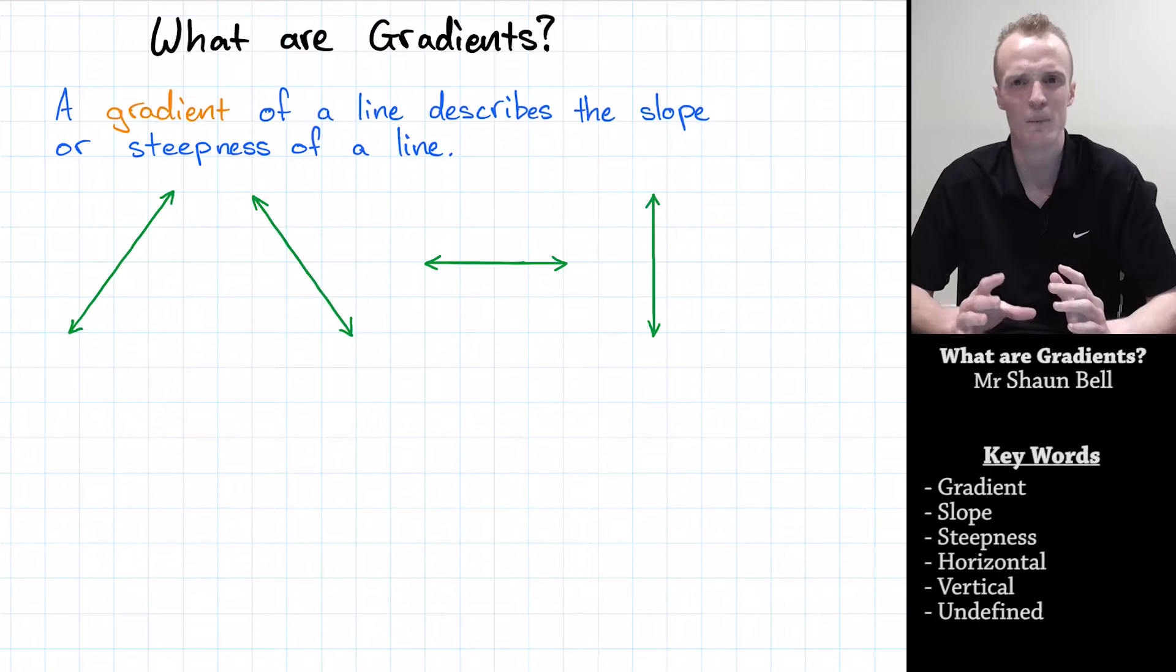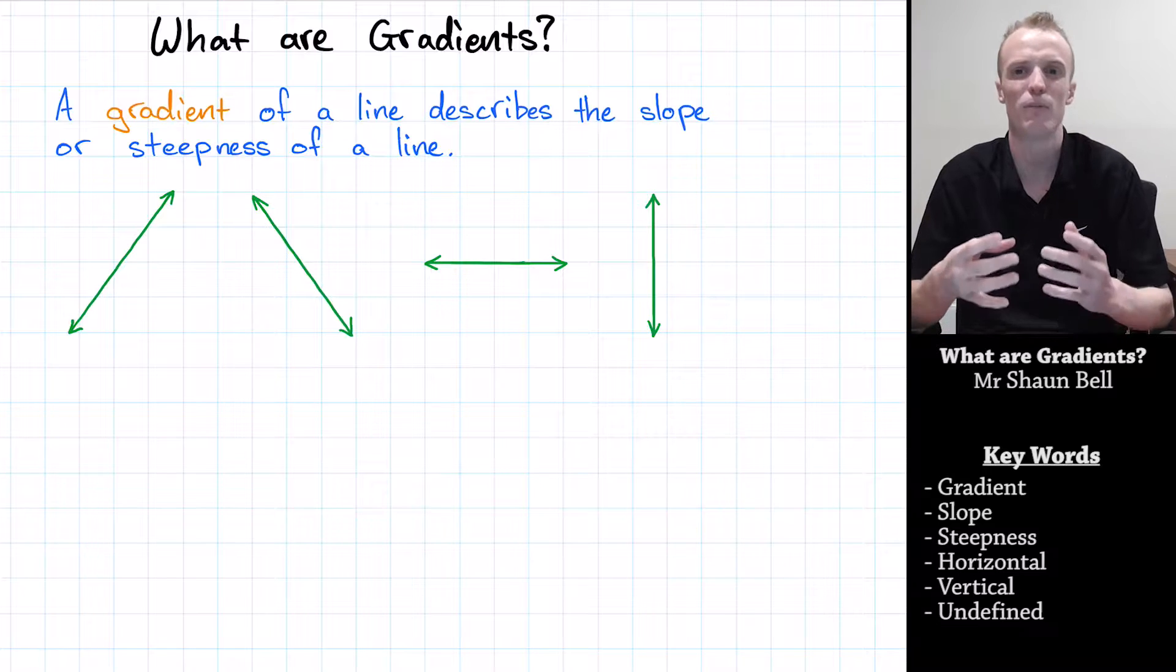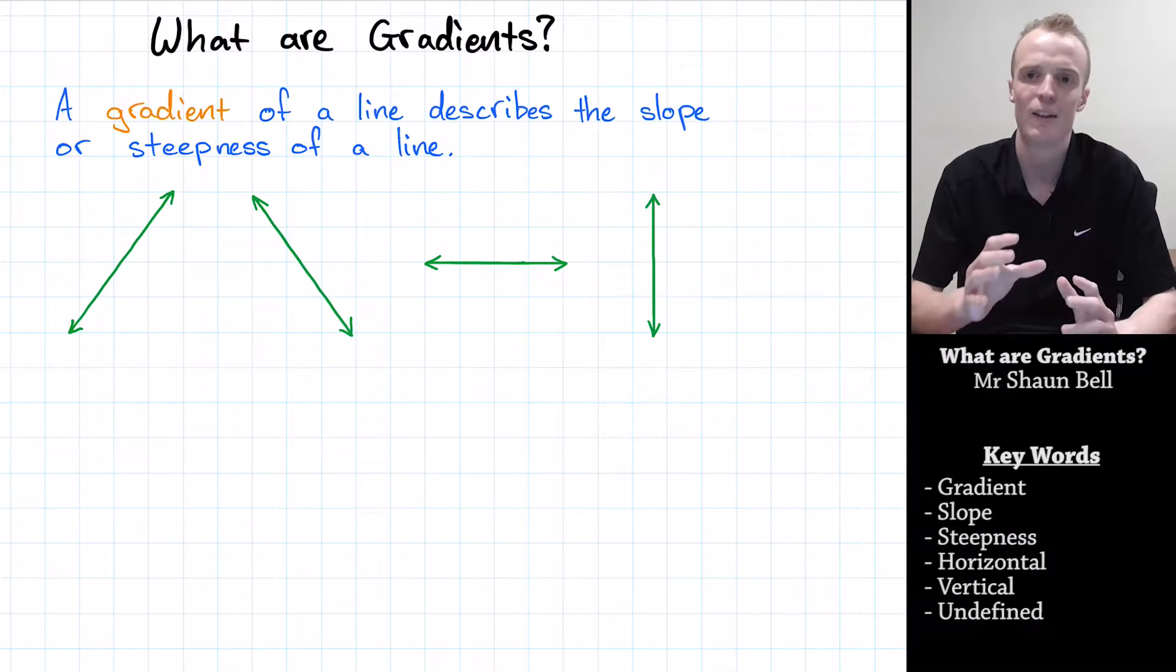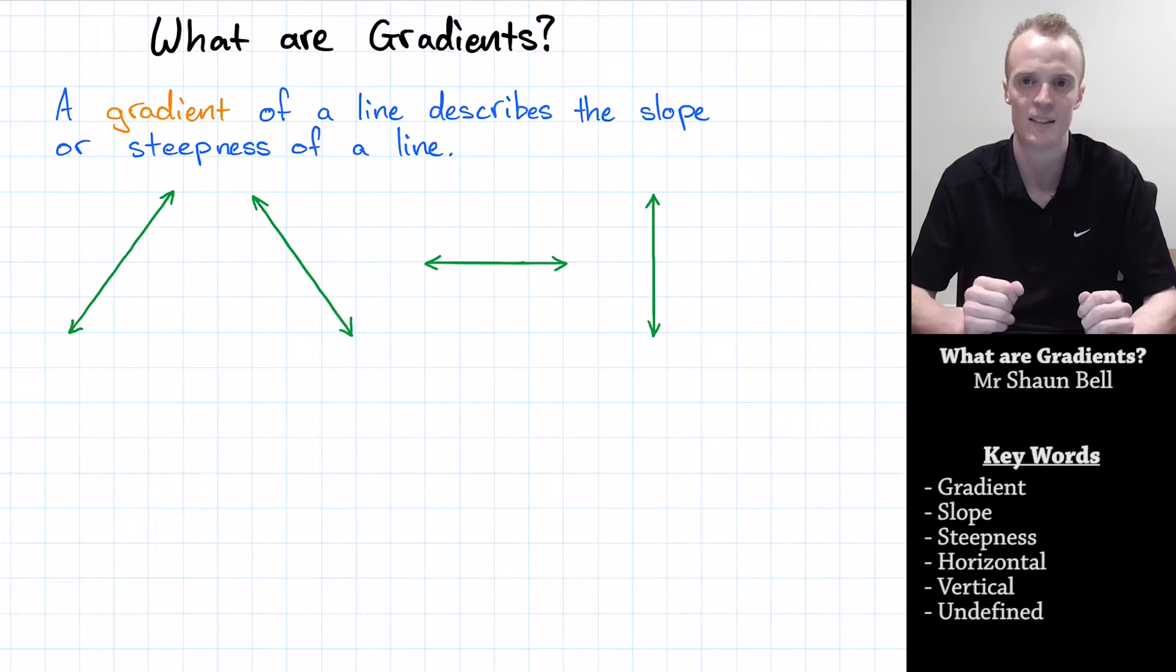The word gradient can also be interchanged with the word slope. Gradient and slope refer to the same thing - they describe how steep a line is. Knowing how steep something is can be rather important in a number of different areas. Before we get too far, let's learn about the four different types of gradients that we can have.